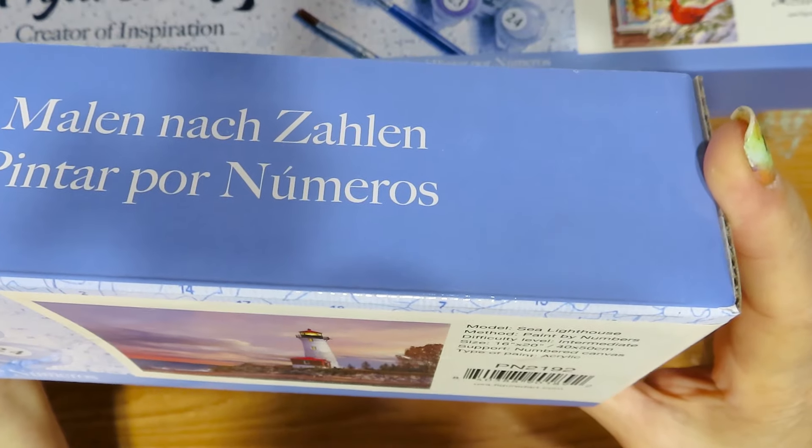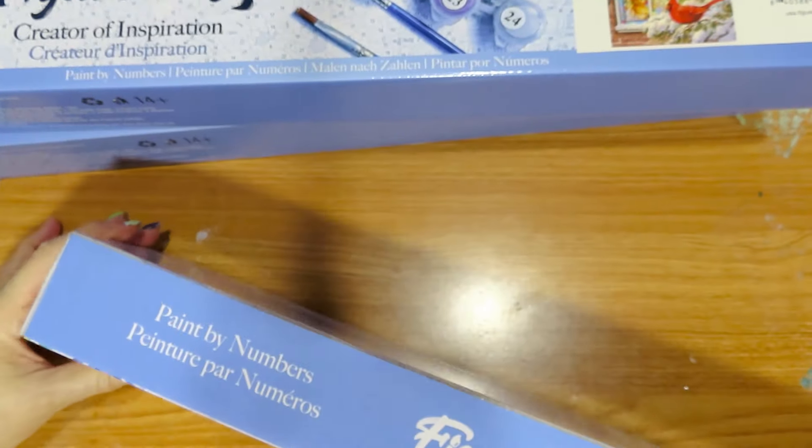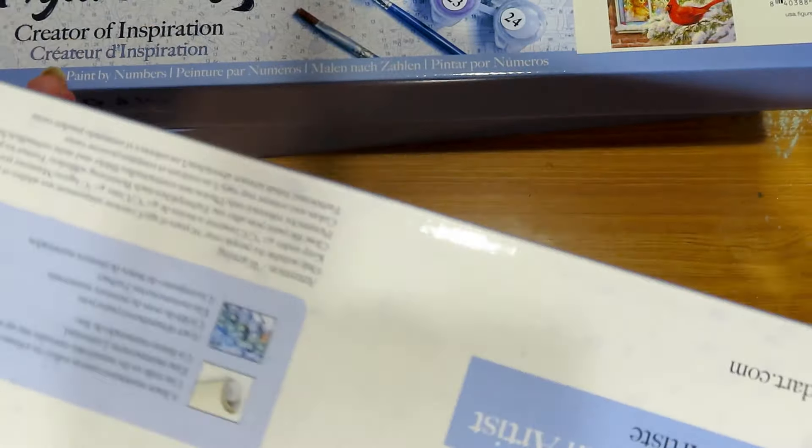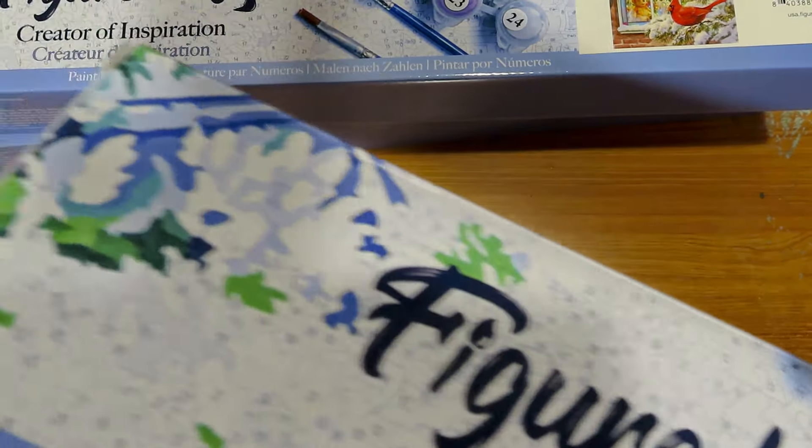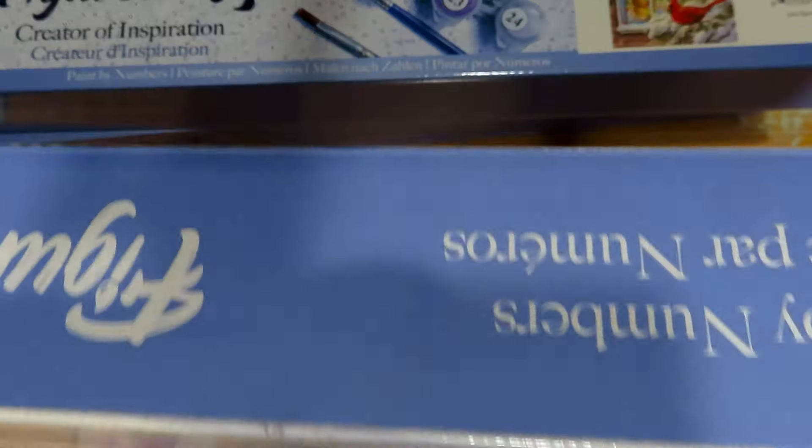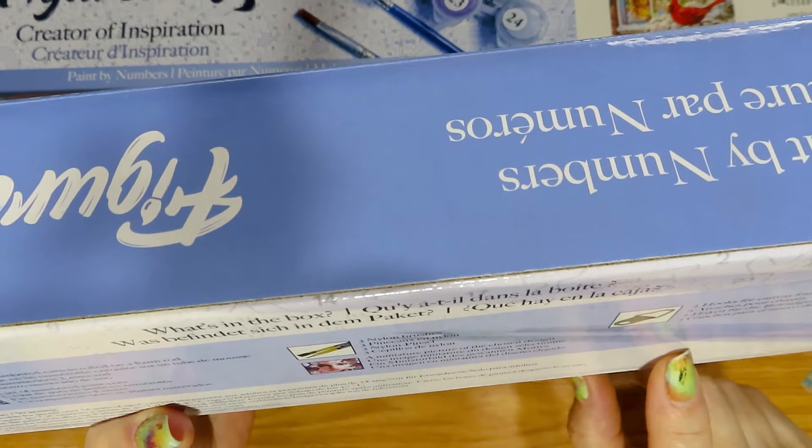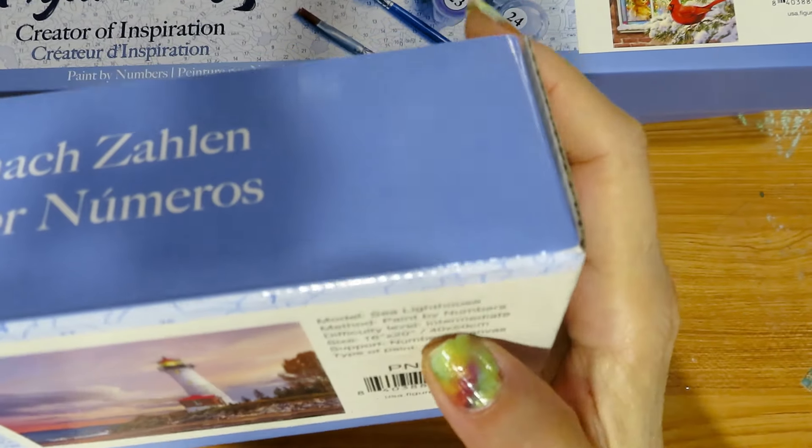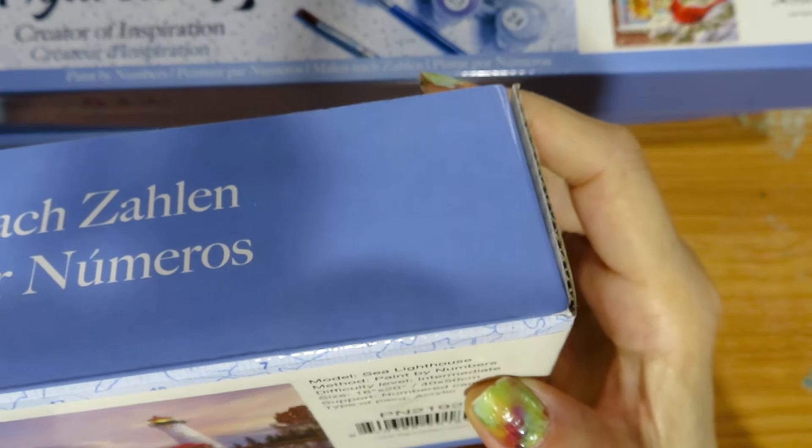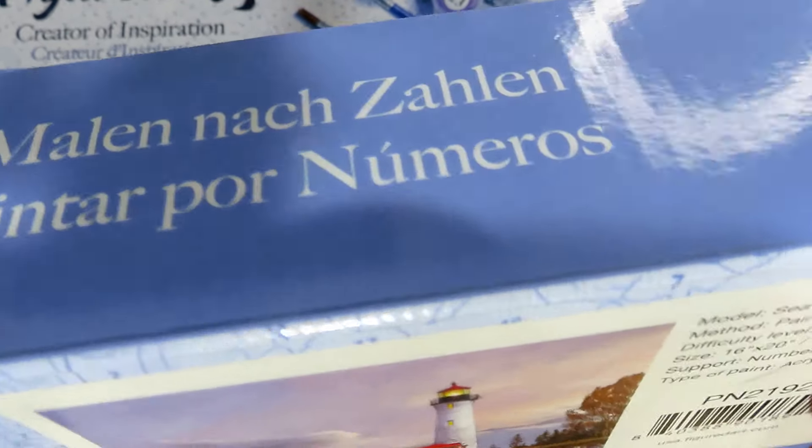So this is the Lighthouse. It's called Sea Lighthouse. First of all, for those of you who are new, Figure the Art comes in a sturdy box. They pack it in a mailer pocket, but the box is sturdy. It looks like it's a French company. It tells you the kit on the back in about three languages: English, Spanish, and French. It has a warning, this is for 14 and above, not for kids. It tells you the difficulty level on the label. This is an intermediate, the size is 16 by 20, type of paint is acrylic, and there's a picture of it.